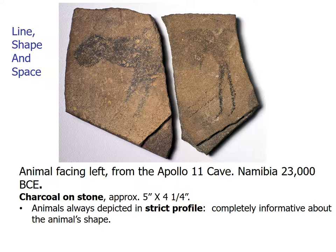Shape is the expanse within the outline of a two-dimensional area or within the outer boundaries of a three-dimensional object. Geometric shapes such as circles, triangles, and squares are precise and regular. Organic shapes are irregular, often curvy or rounded, and seem relaxed and more informal than geometric shapes. The animal facing left shown here is an example of an organic shape.